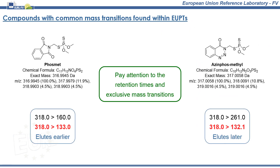Let's continue reviewing the rest of compounds with common mass transitions. It is a good idea for laboratories to include information regarding all these pairs in their own database of common mass transitions, if there is any of these transitions that they are not aware of. The case of fosmet and azimphosmethyl was detected within a EUPT in avocado. The troublesome mass transition is 318 precursor ion to 133 in the case of fosmet, and to 132.1 in the case of azimphosmethyl. Also, fosmet elutes earlier than azimphosmethyl. Pay attention to the retention times and exclusive mass transitions.